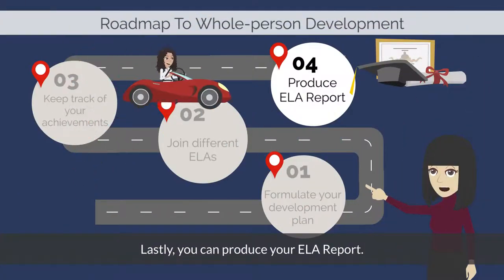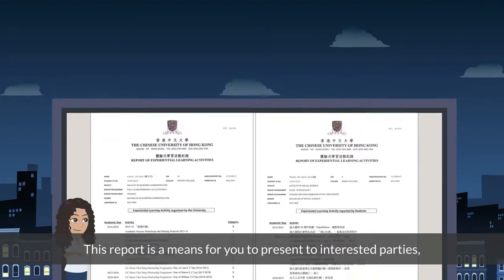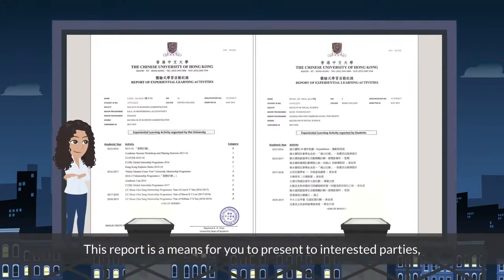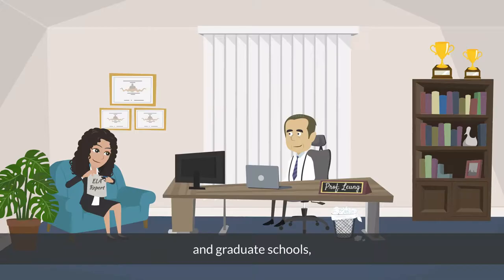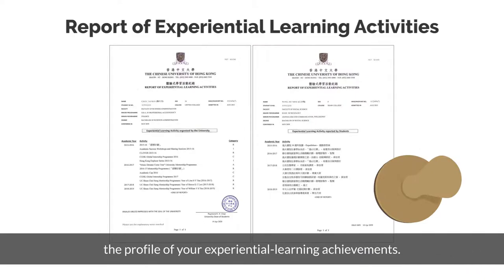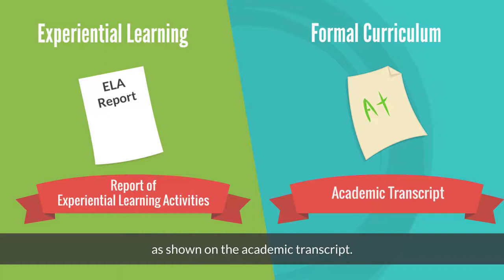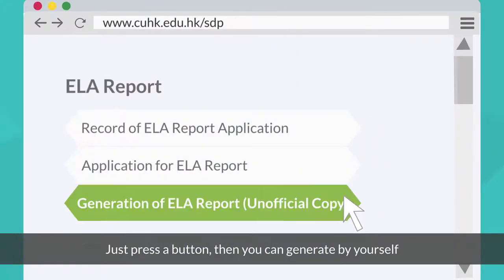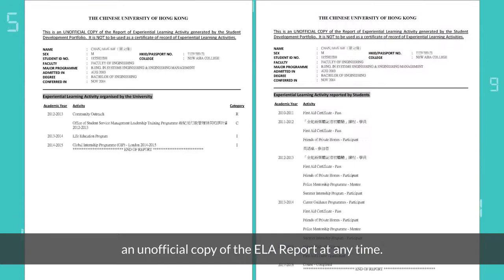Lastly, you can produce your ELA report. This report is a means for you to present to interested parties — such as potential employers and graduate schools — the profile of your experiential learning achievements. It can serve to supplement your curricular results as shown on the academic transcript. Just press a button and you can generate an unofficial copy of the ELA report at any time.